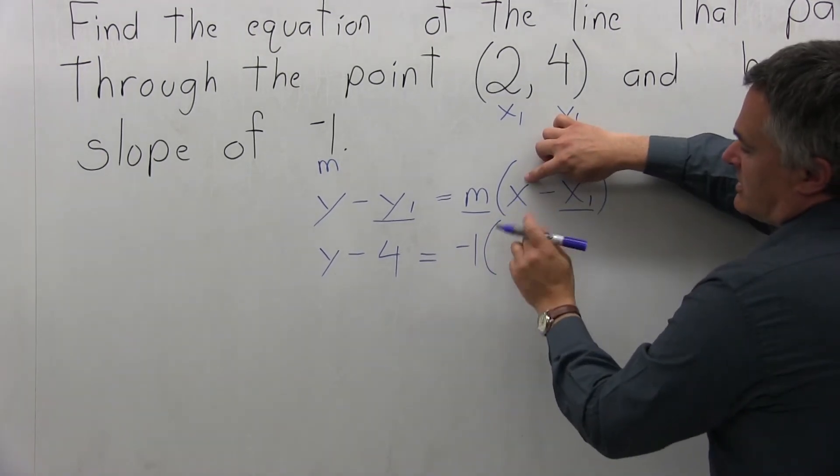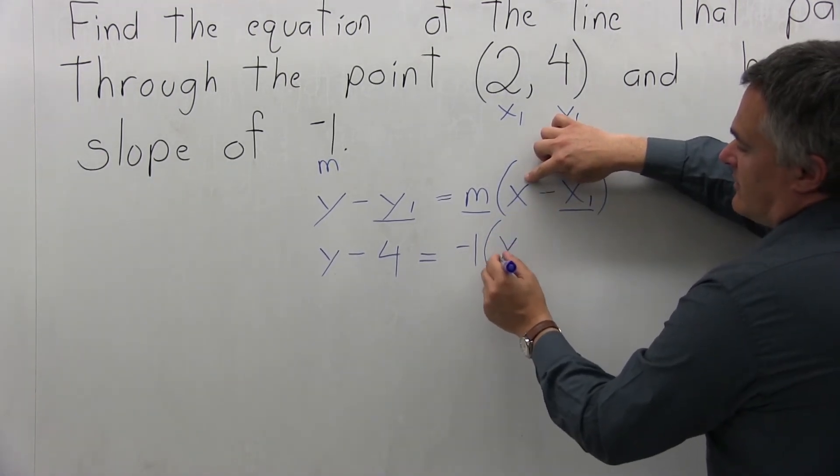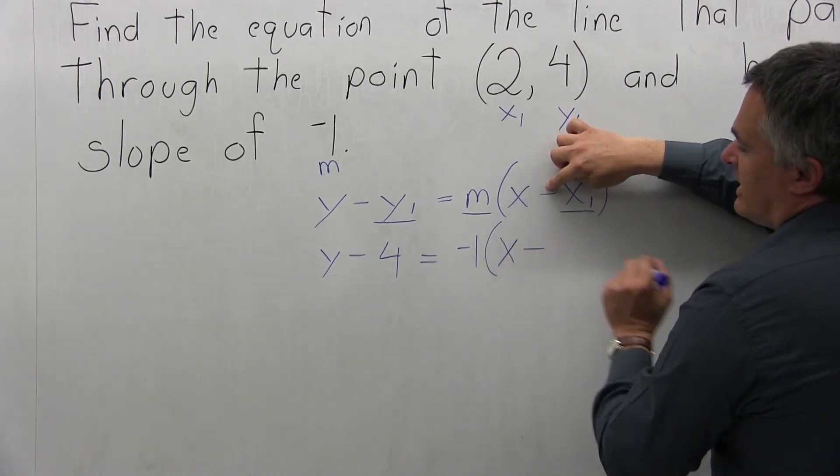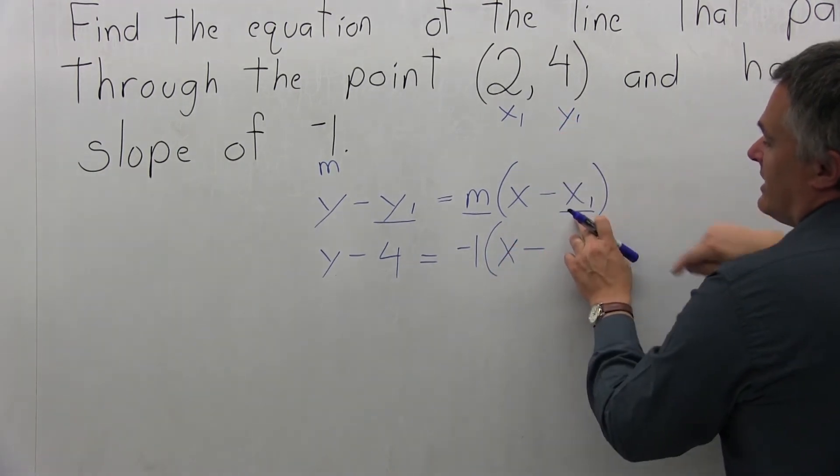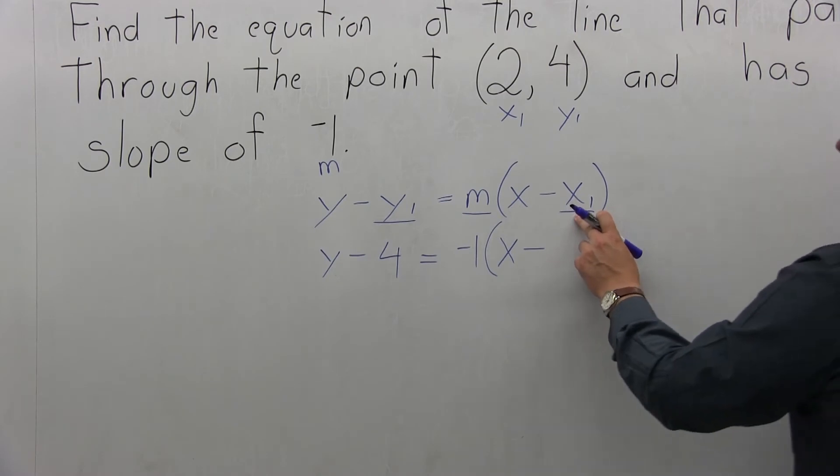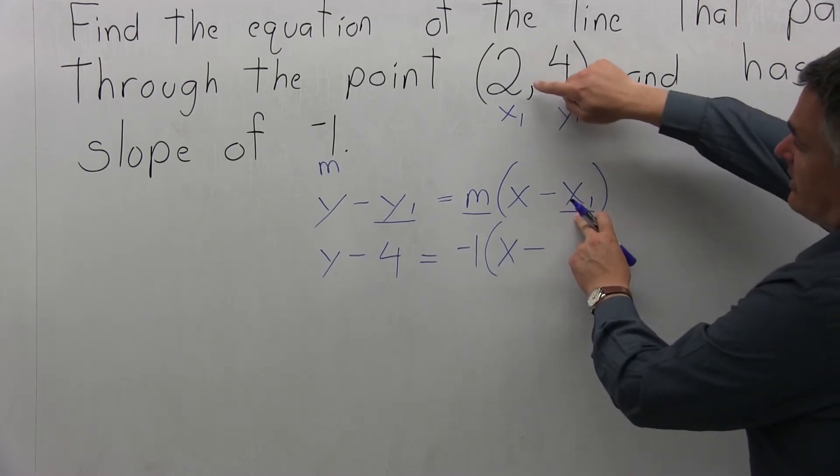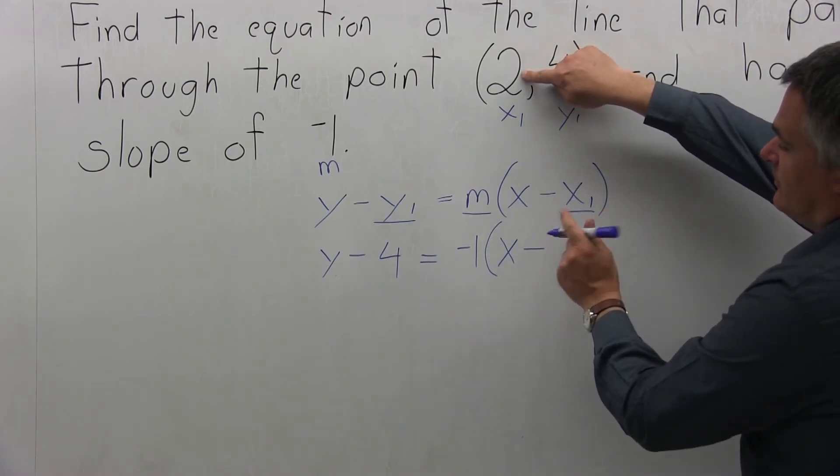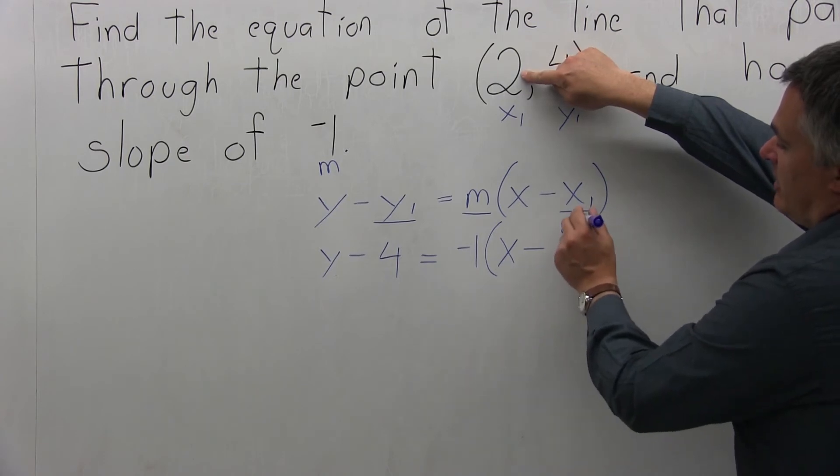This x will stay because it does not have an underline. Then we have minus. And now x1 at the end does have an underline, so we have to find a number value for it, which will be 2. And now I'll close the parentheses.